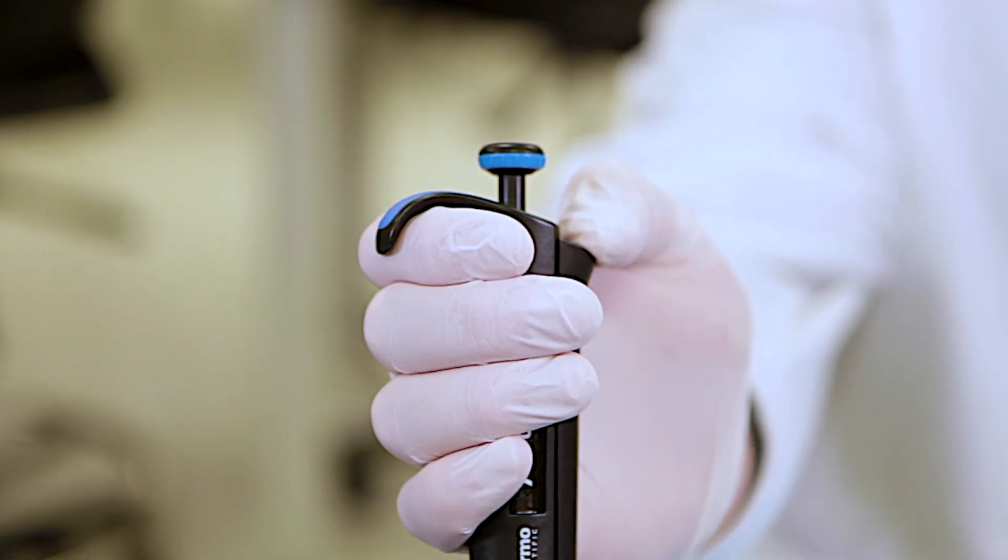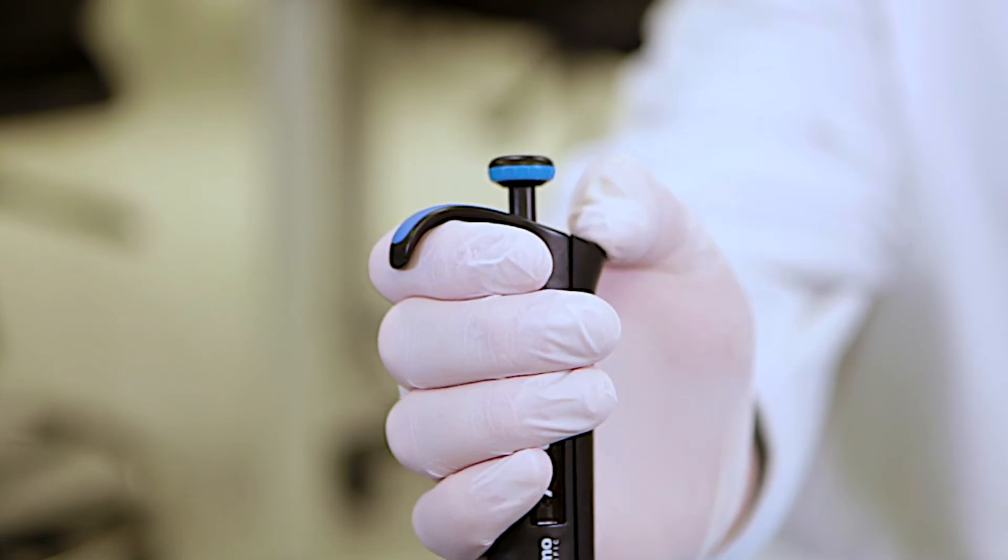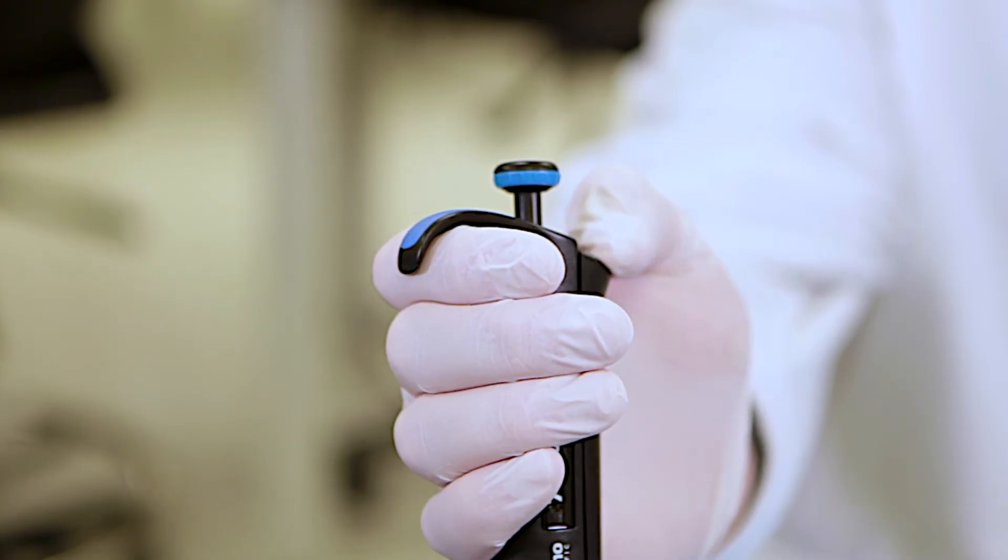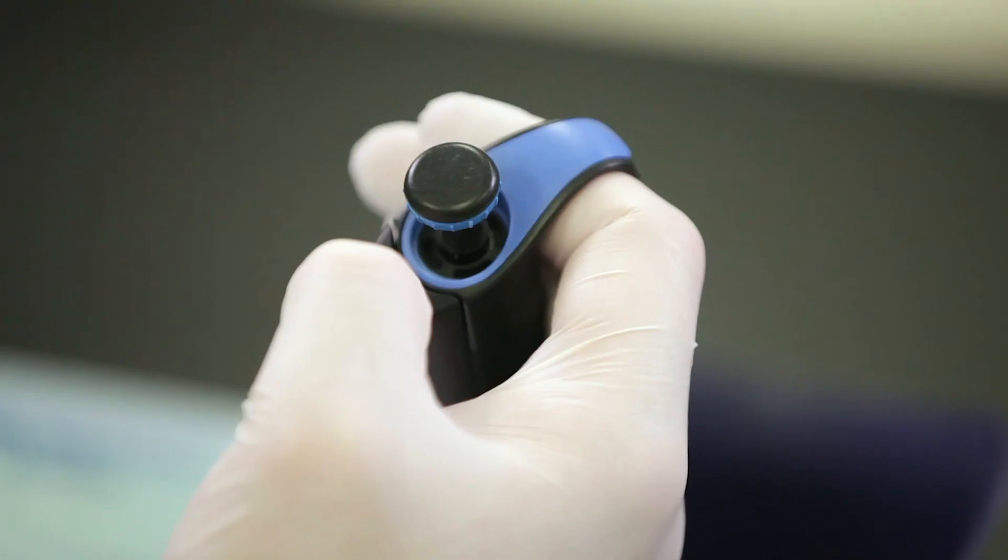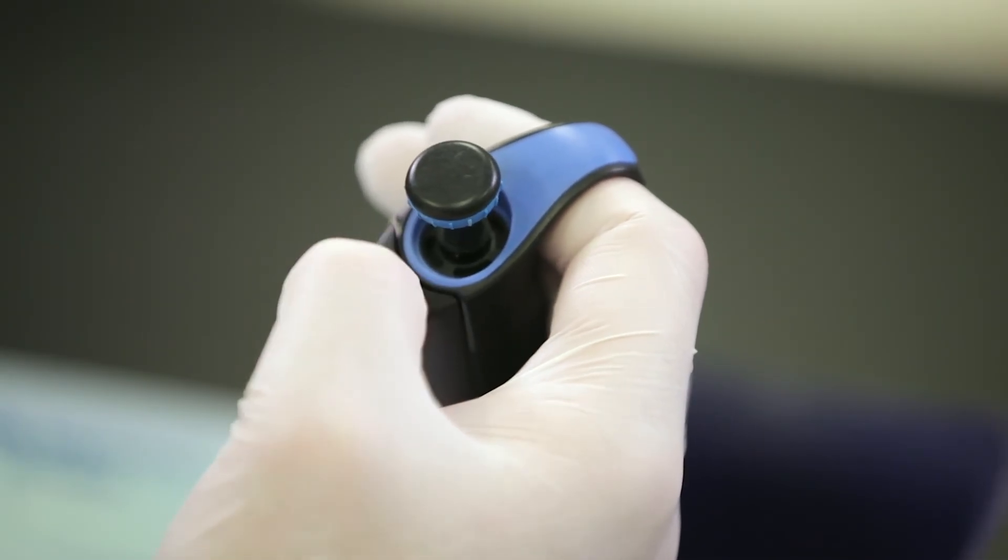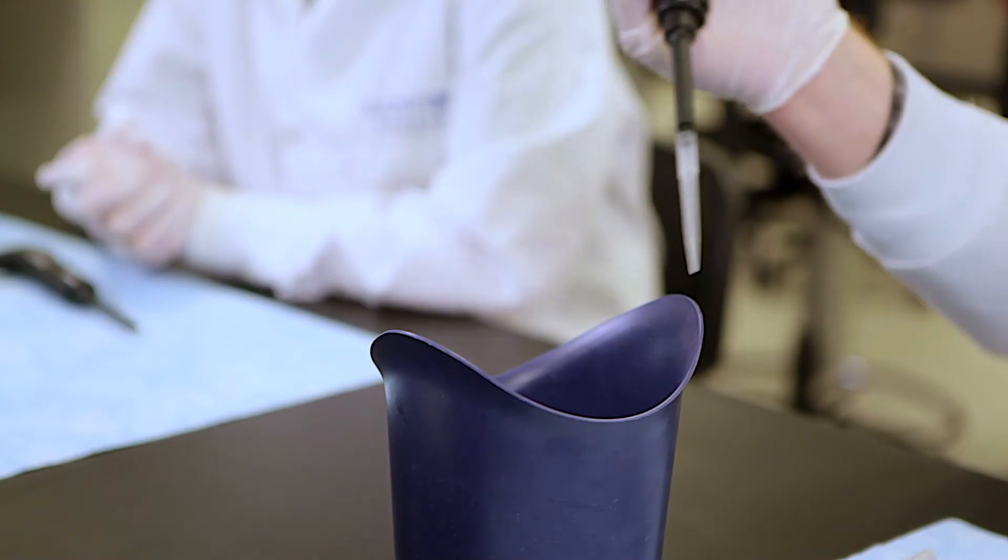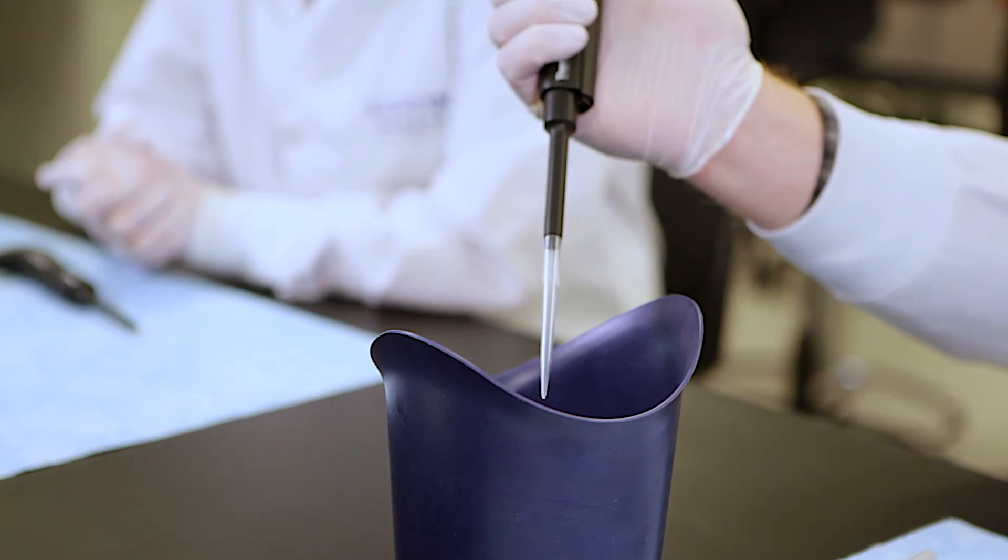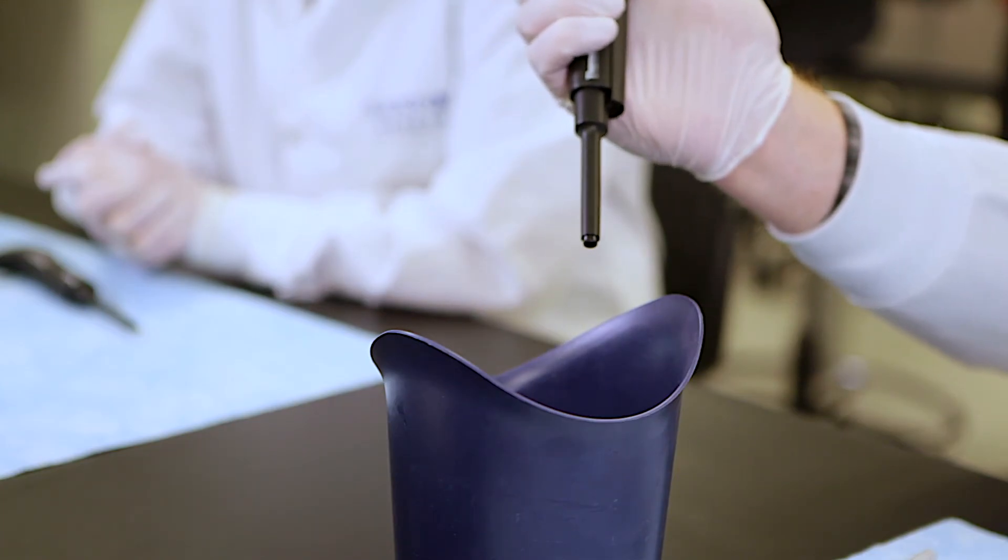Once you have aspirated the liquid, press down on the tip ejector to release the pipette tip from the pipette. The tip ejector is the small button at the bottom of the main body of the pipette. Make sure the attached pipette tip is inside the appropriate waste container before pressing the eject button.